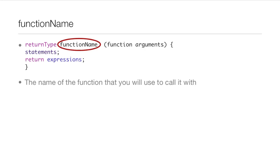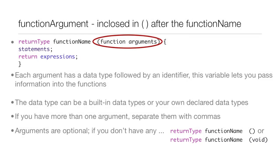I didn't really understand it for the longest time, but the arguments are enclosed in the parentheses after the function name. You can see the example right there. Each argument has a data type followed by an identifier. This variable that you declare lets you pass information into the functions.